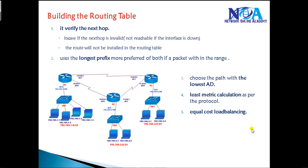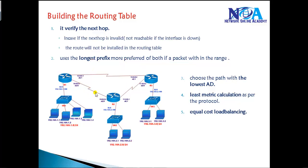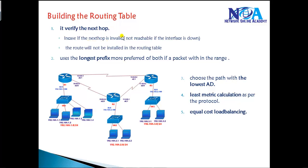In this video we'll see what is the default step-by-step method of routes getting installed in the routing table, what is the default order of selection. By default, before any route gets installed in the routing table, it must have a valid next hop. The router verifies the next hop - if the next hop is reachable, only then will the route be installed. If the next hop is not reachable, the route will not be installed.